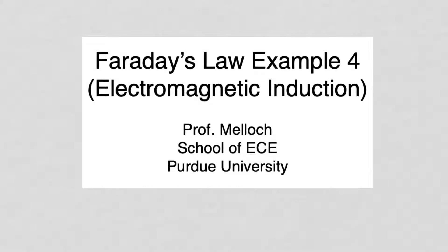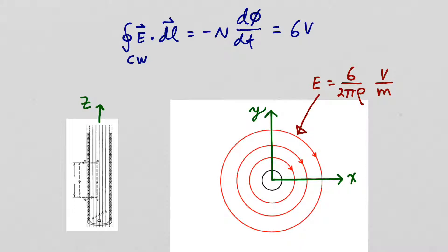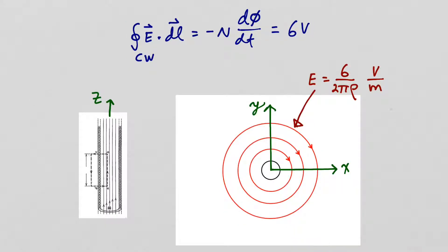In example 1, we saw how ramping the current in a solenoid resulted in a changing magnetic flux that produced an electric field intensity. If the ramping current produced an increasing magnetic flux in the z direction, looking through a cross section of the solenoid, the resulting electric field intensity forms circles around the solenoid. The current was ramped to produce an electromotive force of 6 volts, giving an electric field magnitude of 6 over 2π ρ volts per meter, where ρ is the distance from the center of the solenoid.